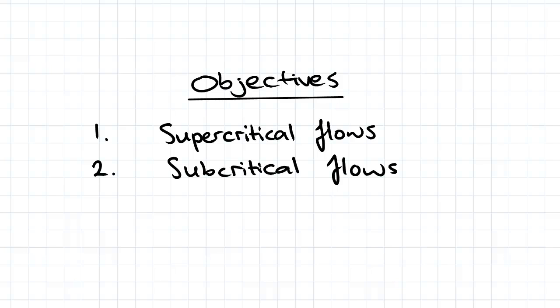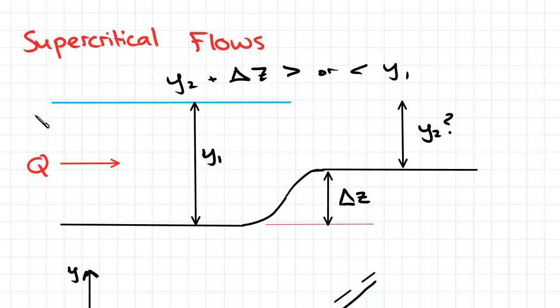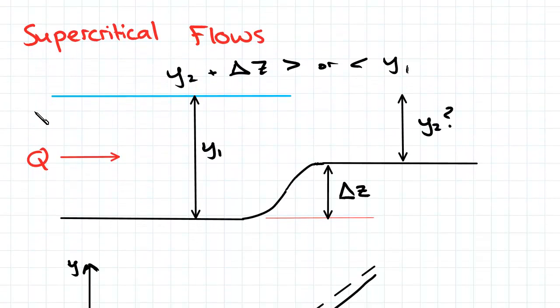So if you consider this scenario here, the upstream depth is going to be some variable y1, but for the downstream depth we don't yet know if it's going to rise or drop. That is, we don't know whether y2 plus delta z is greater than or less than y1.